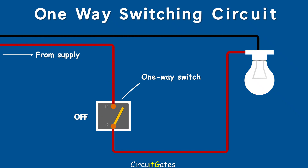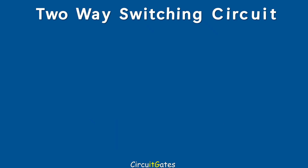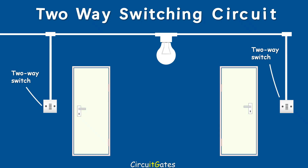Now that we understand a one-way switching circuit, let us move on to a two-way switching circuit. A two-way switching circuit is a light switching circuit in which a lamp or lamps are controlled from two different locations. This type is used to control lamps in places such as stairways, corridors, and rooms with two entrances.